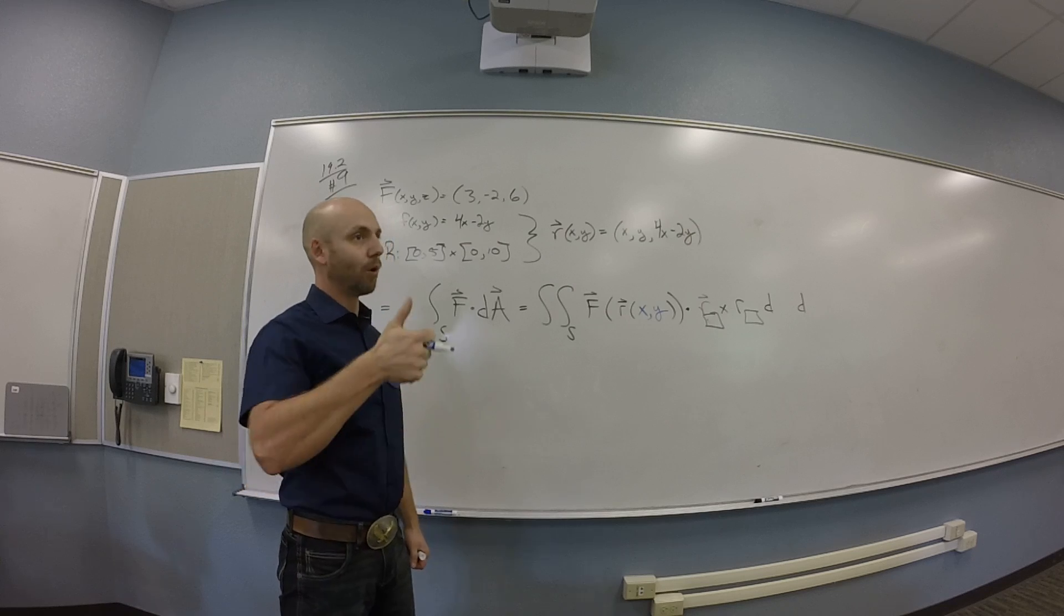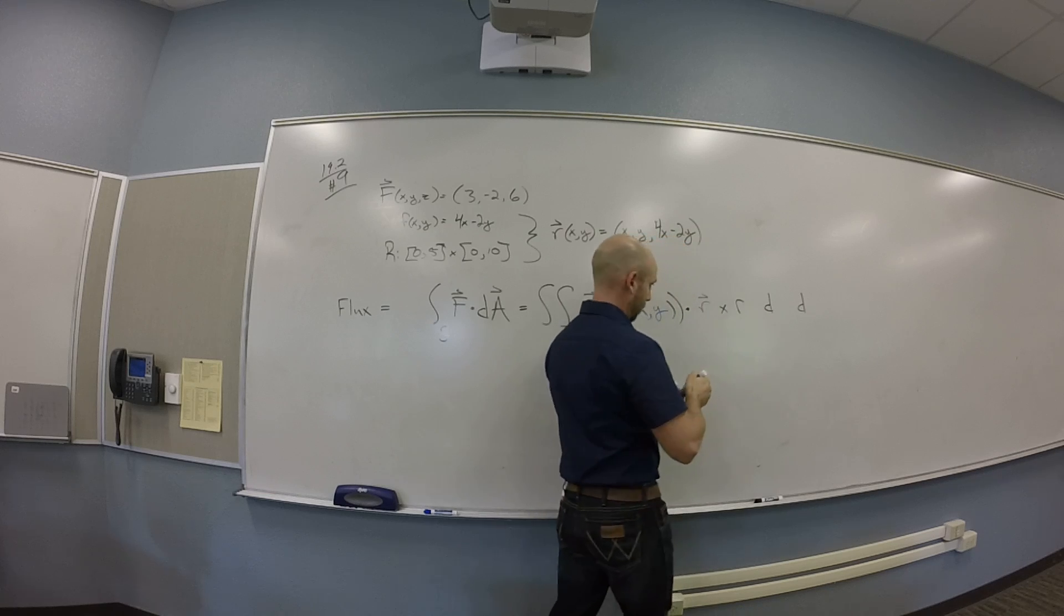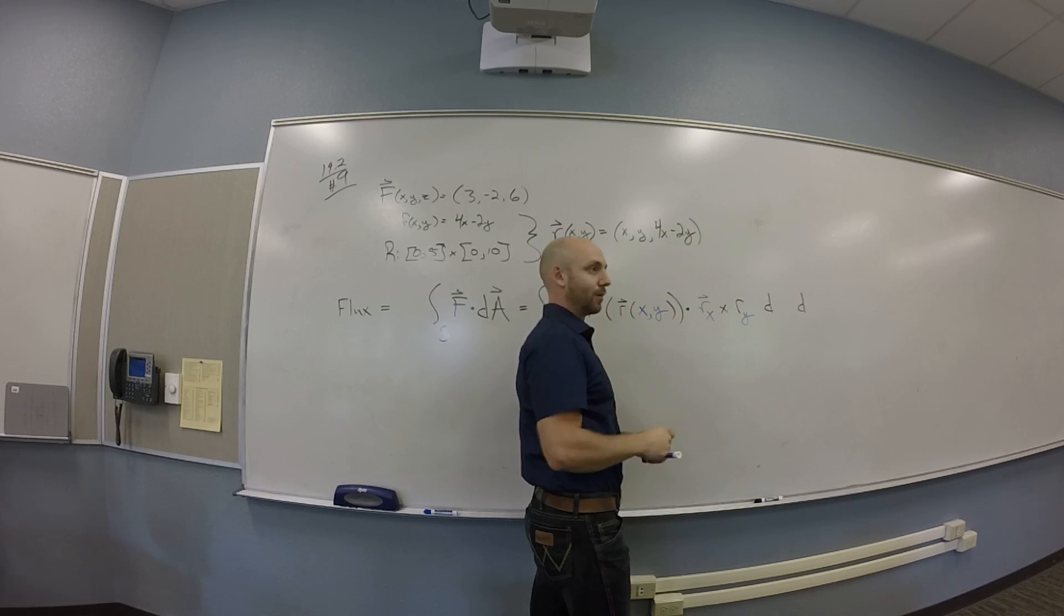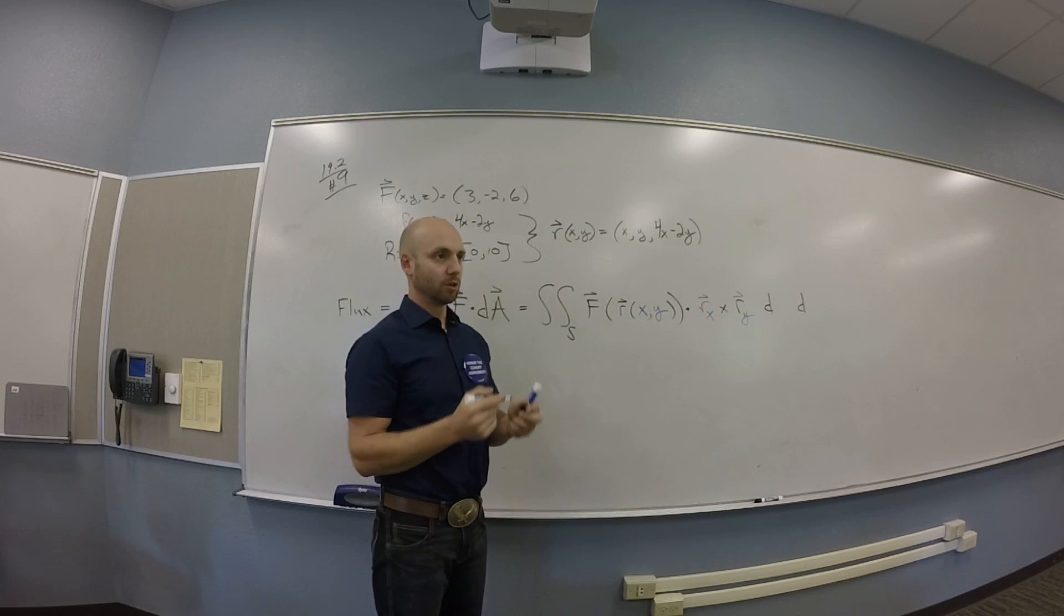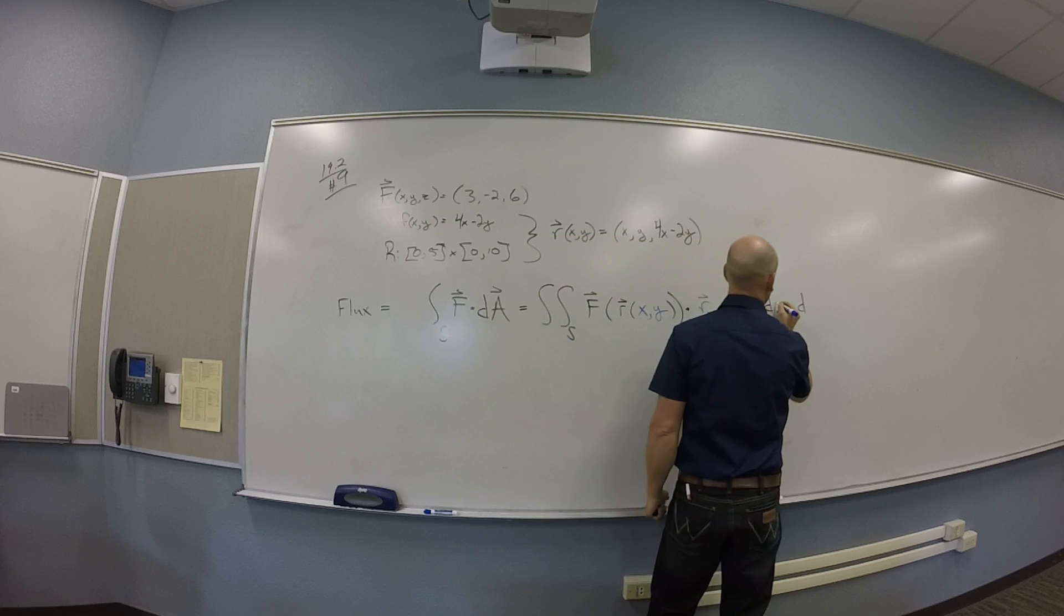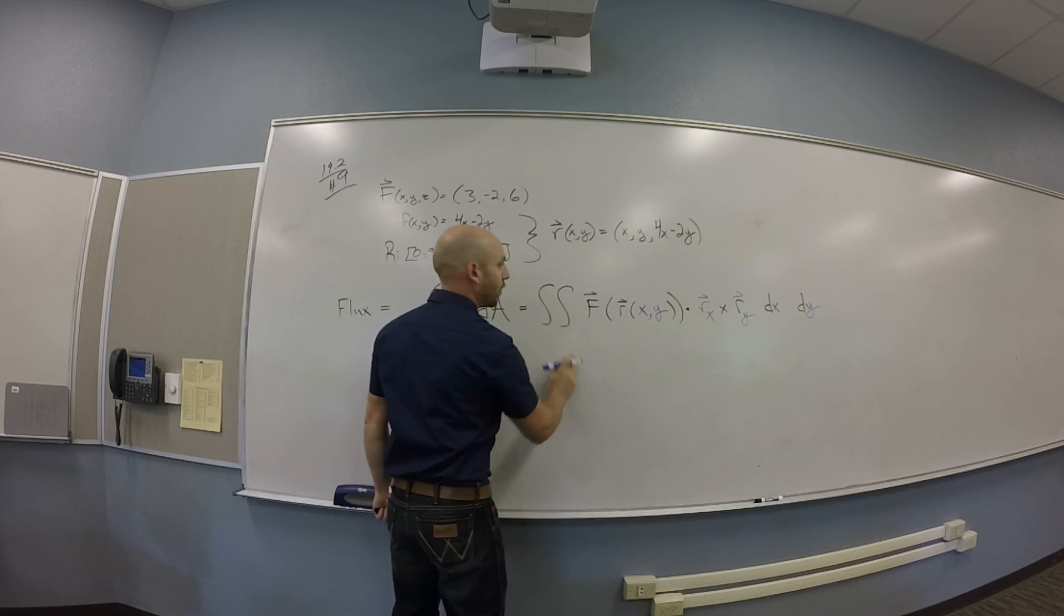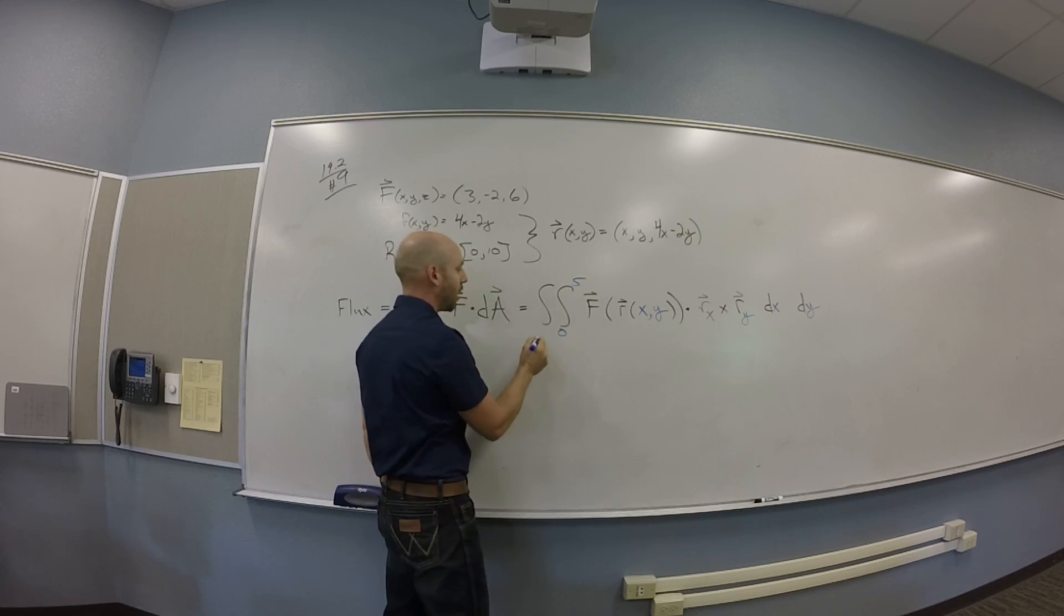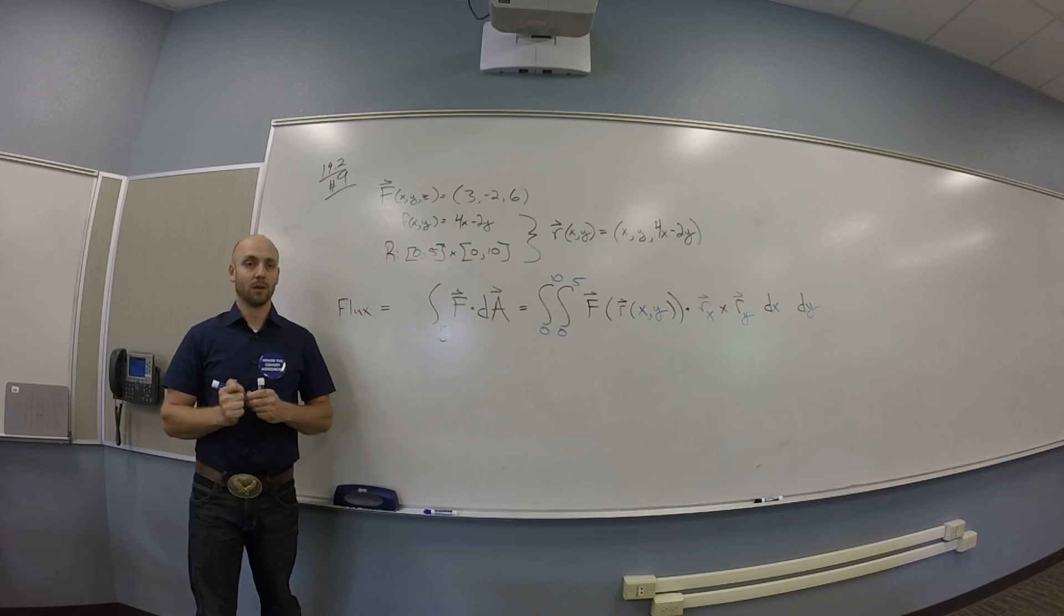So to get oriented upward, you need which cross which? Rx cross Ry, correct? Right-hand rule, right? X-axis, Y-axis, up. And then I'm going to integrate. So what are your variables of integration here? X and Y. It doesn't matter which order you go in? No. Rectangle. It's over a rectangle, so it doesn't matter. And so what are your X bounds over your rectangle? Zero to five. And your Y bounds are zero to 10. You guys all good with that?